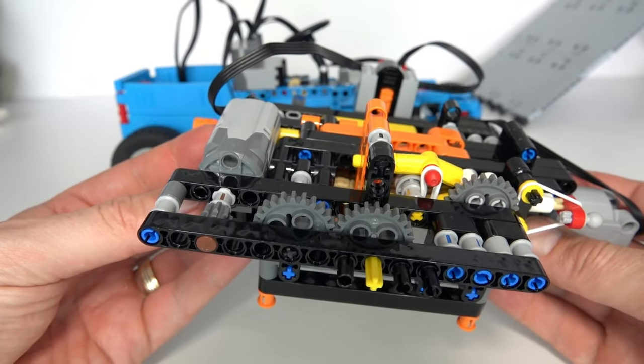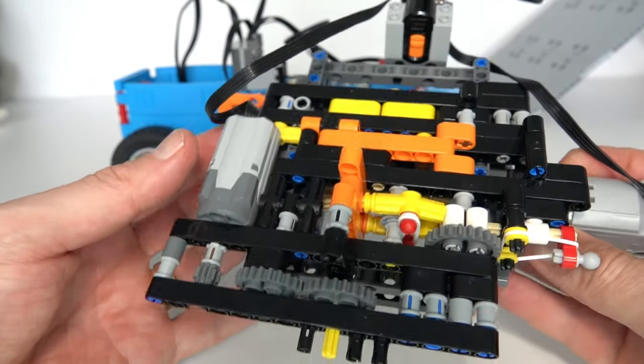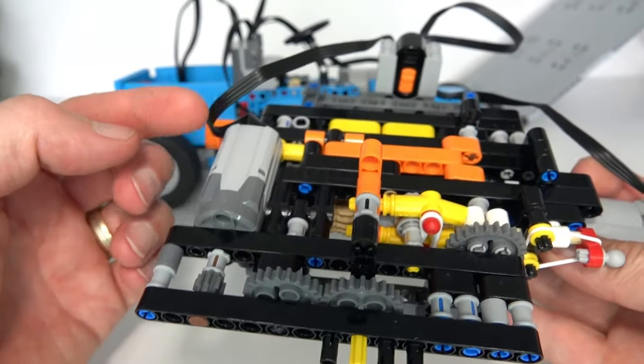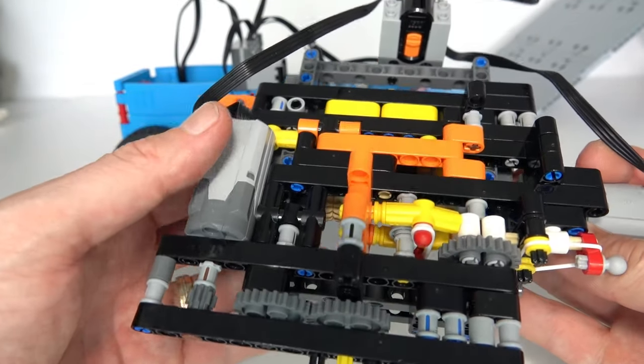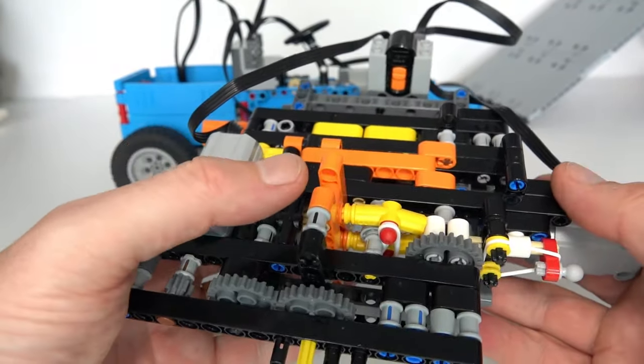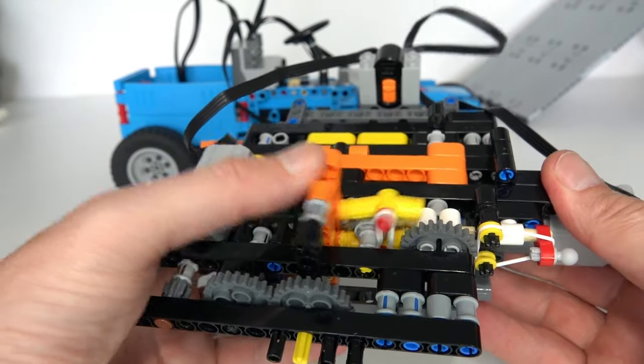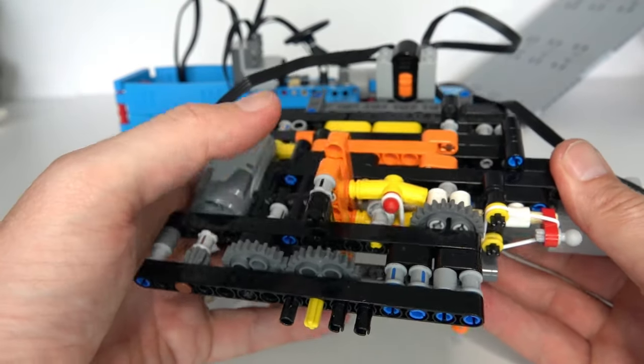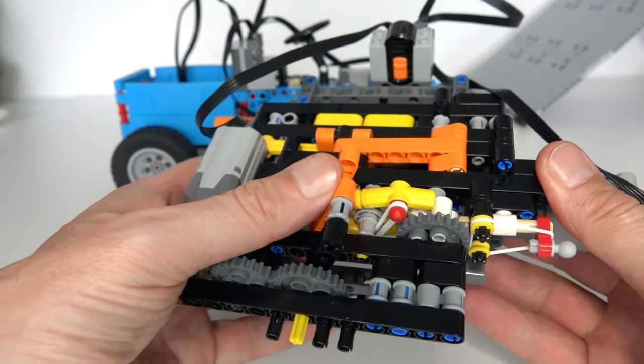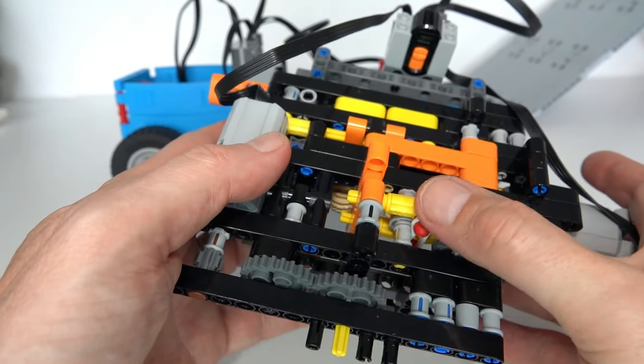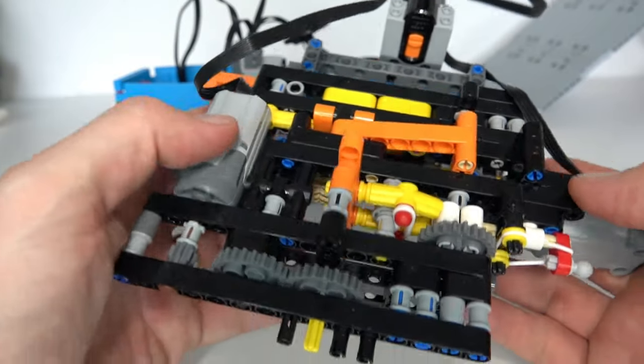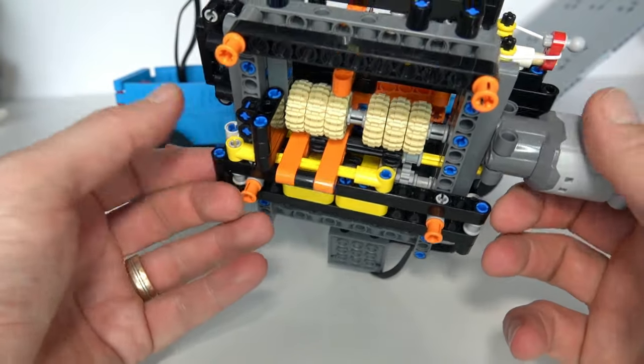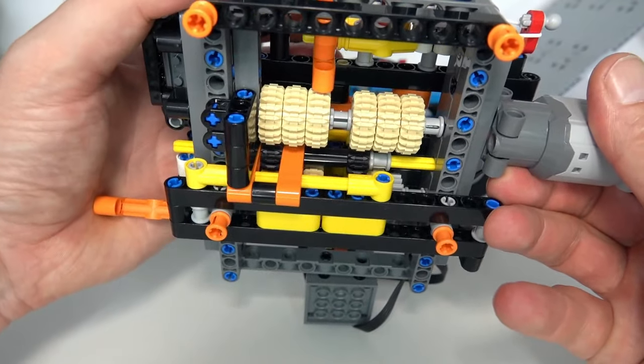So last week what I presented was this three speed remote controlled manual gearbox. Now the idea of this gearbox is that using this medium sized power functions motor to drive a gear stepper, you can step between one of three different gears using your remote control. And that works by driving this stepping mechanism which in turn drives this arm which pushes a gearing mechanism along the bottom there.